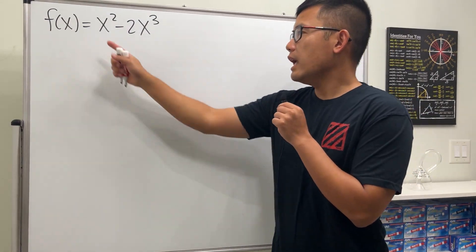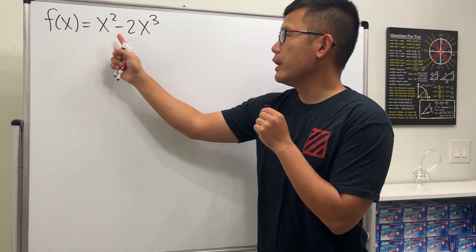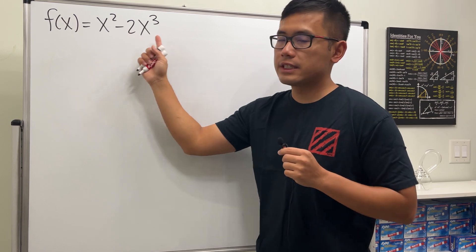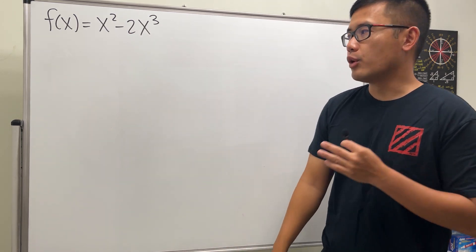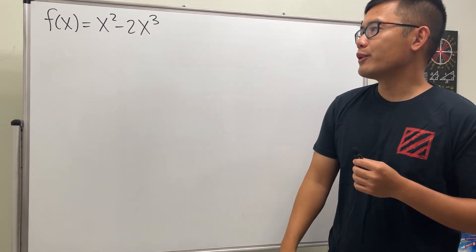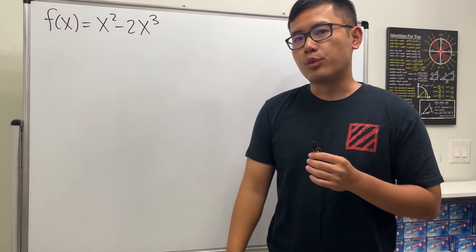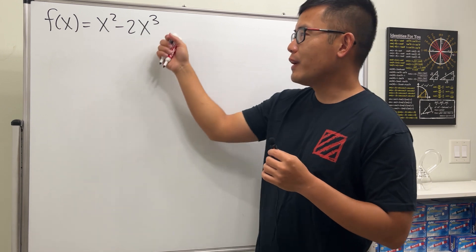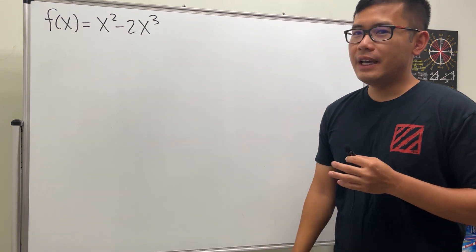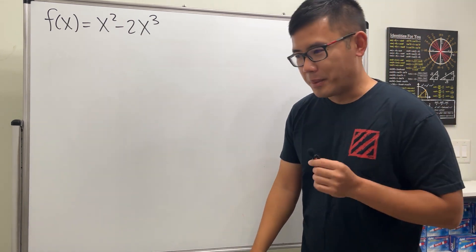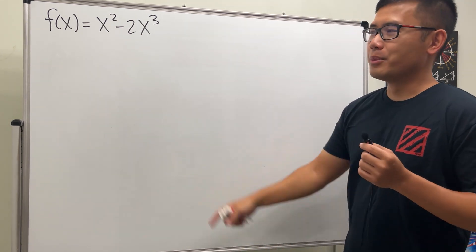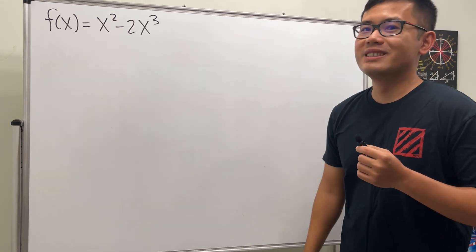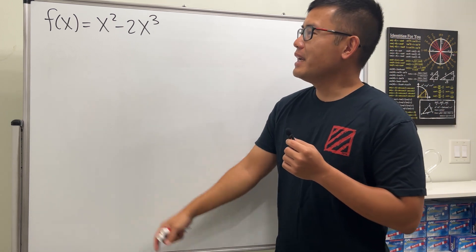Here we have our function f of x is equal to x squared minus 2x to the third power. We are going to find its domain and then use the definition of derivative to find its derivative and also the domain of the derivative. So let's find the domain of this one first.